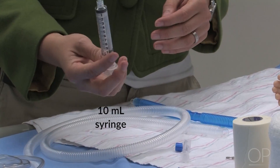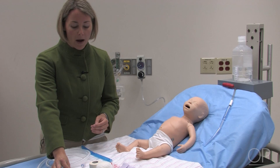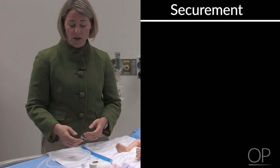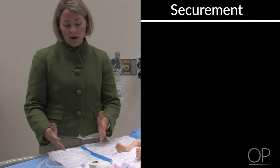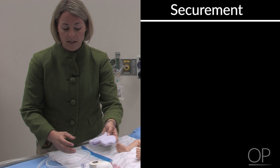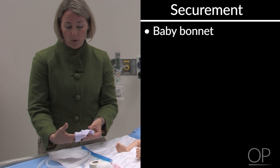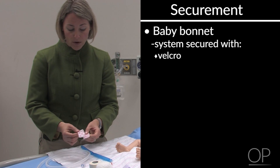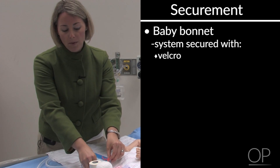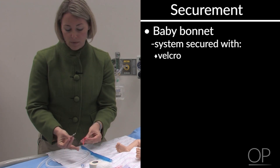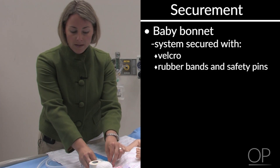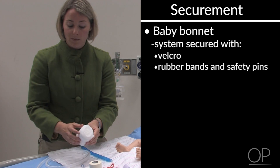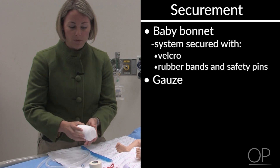You'll also need a 10 ml syringe, which will be used to secure the tubing in place in your bottle. And you'll need some way to secure this interface to your patient. There are many commercially available products, such as a baby bonnet that goes over the head, which can be secured with Velcro or with rubber bands and safety pins. You could also choose to not use a bonnet and instead use some gauze to wrap the system in place.